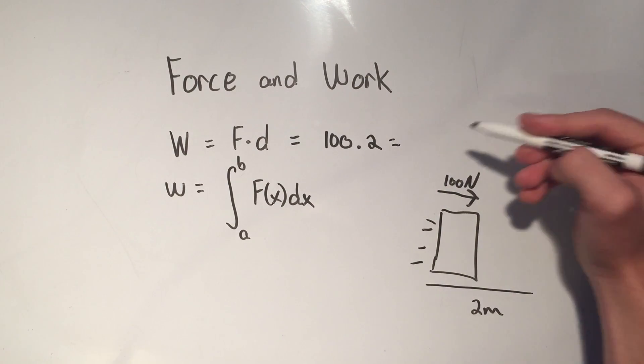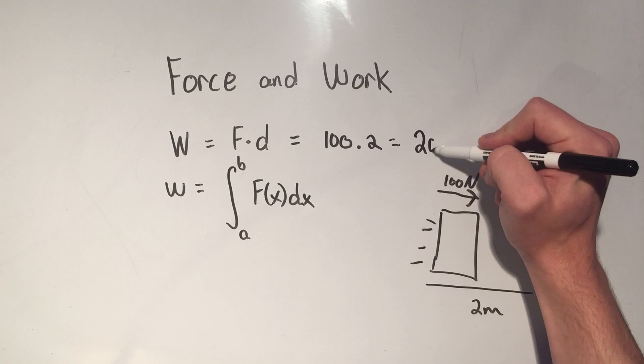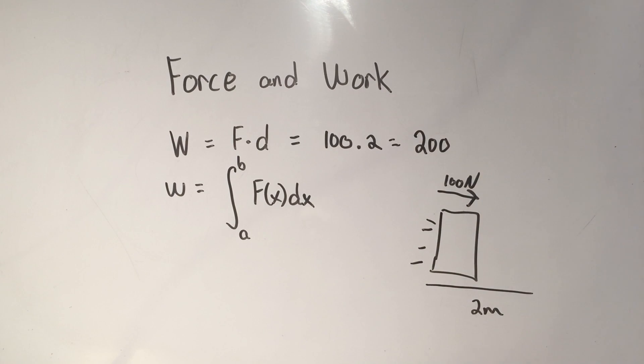Then the amount of work you would have done is 100 times 2, or 200. That's simply it. Work is just force times the distance applied.